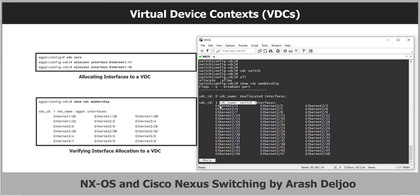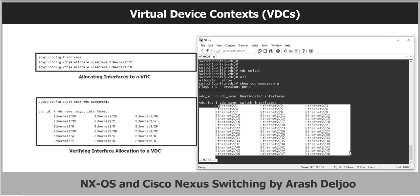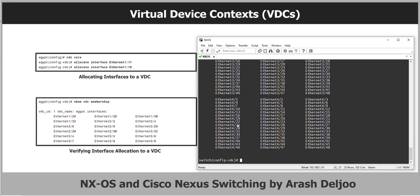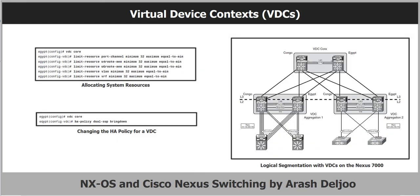The 'show vdc membership' output shows the VDC name, interfaces included in that VDC, and so on. Here we can see one VDC named 'switch' with all interfaces as members of VDC one. In your actual switch, you may see VDC one through four, each with its own set of interfaces. In addition to interfaces, other physical resources can be allocated to an individual VDC, including IPv4 route memory, IPv6 route memory, port channels, and SPAN sessions.